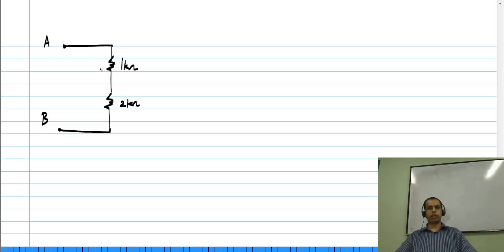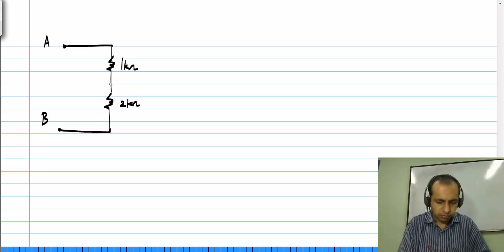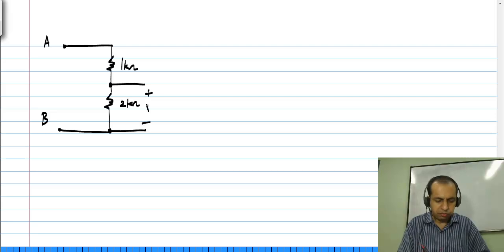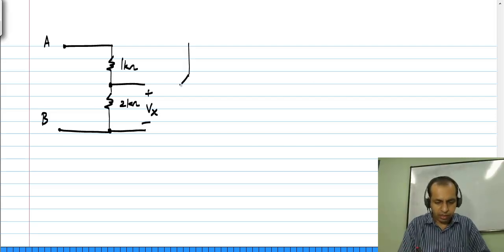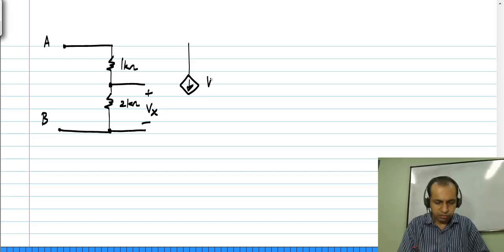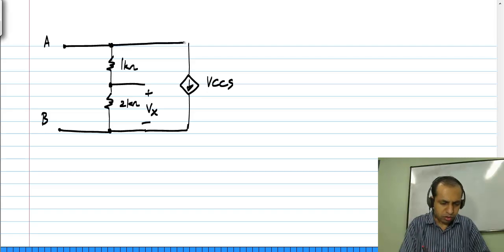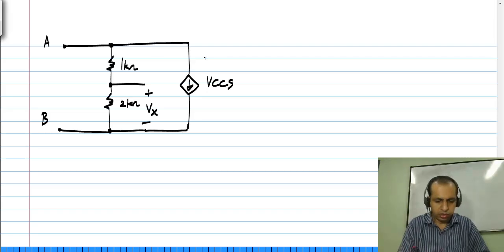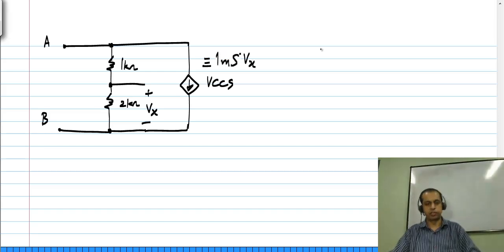You could have a voltage source there and you could be asked to find some current and so on. All those can be carried out equally easily. Let me define this voltage as Vx and I will define a voltage controlled current source which is 1 milli Siemens times Vx and again I ask what is the equivalent between the nodes A and B.